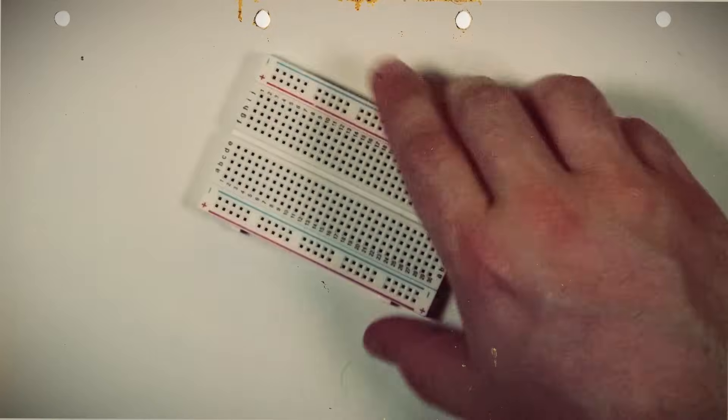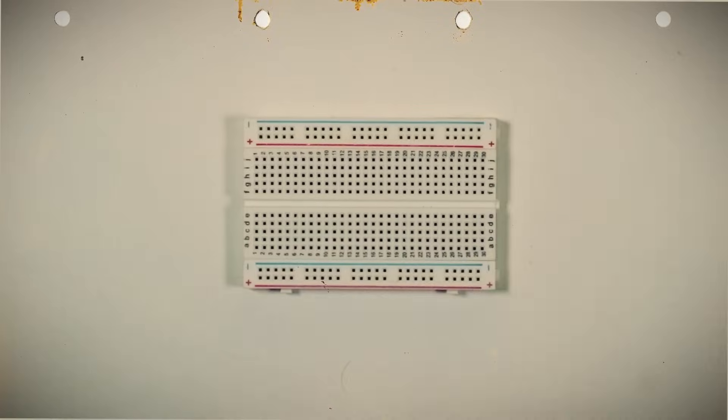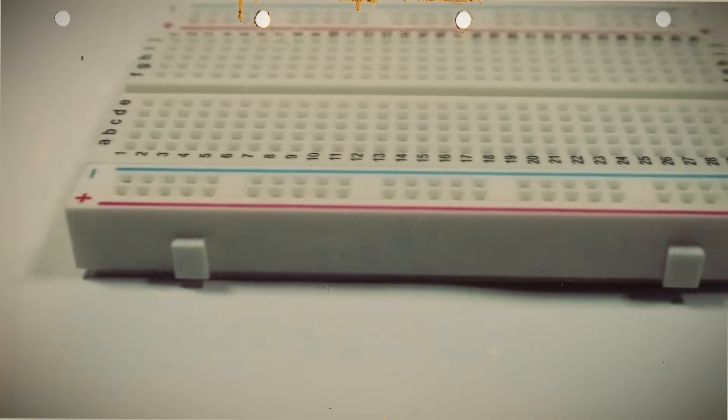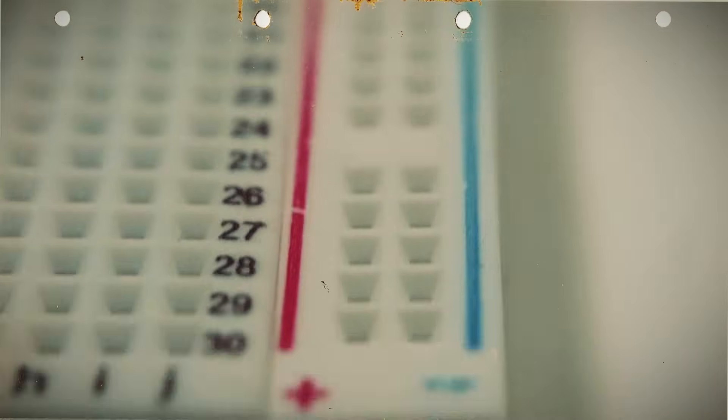So how does this piece of plastic full of holes help create circuits? Let's take a closer look. Starting from the outside and working in, most breadboards have two rows of holes that run the entire length of the board with a colored stripe along either side of them.